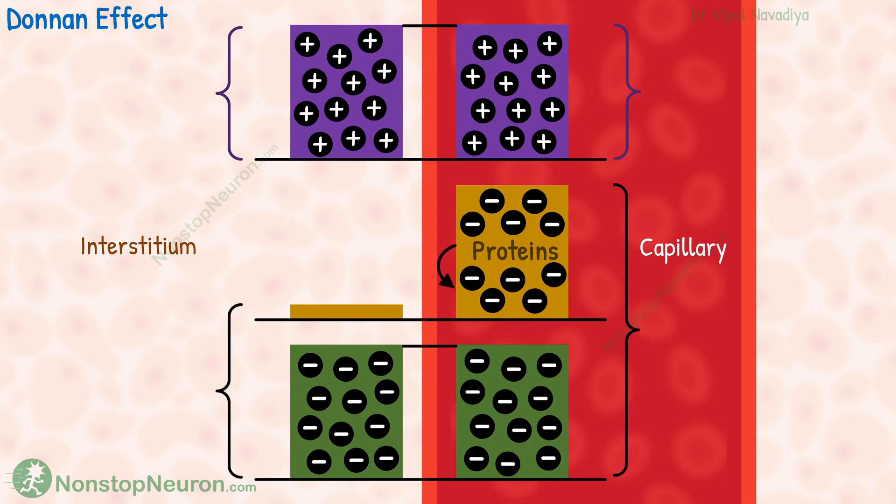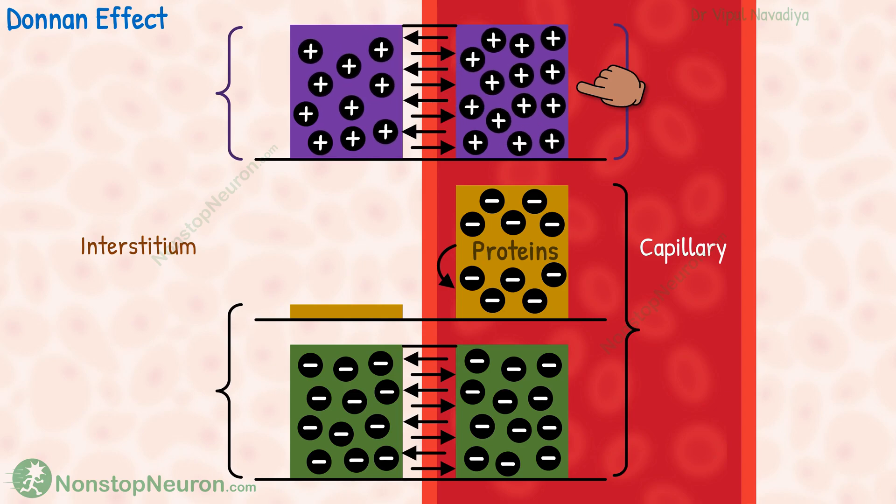Now the proteins cannot cross the membrane, but the small ions can. So the net negative charge in the plasma attracts positively charged ions from the interstitium.